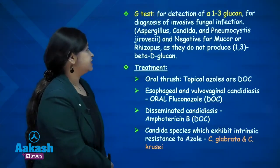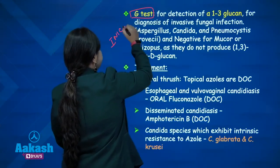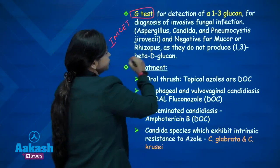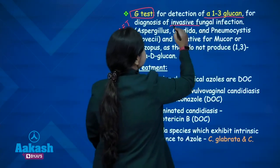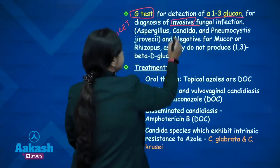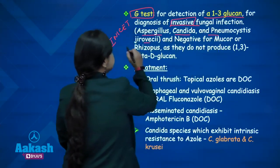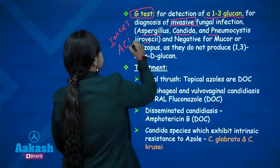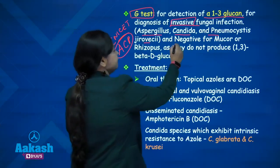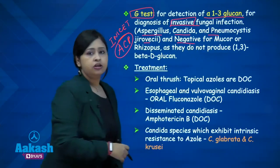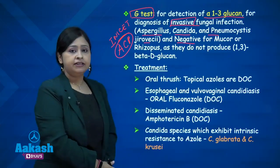Next is the G-test, which is important and has been asked in the INICET recent exam. This test is for detection of alpha-1,3-glucan for the diagnosis of invasive fungal infections. It is positive for Aspergillus, Candida, and Pneumocystis jirovecii — remember as ACP. It is negative for Mucor and Rhizopus, so in patients with infection due to zygomycetes this test will be negative.